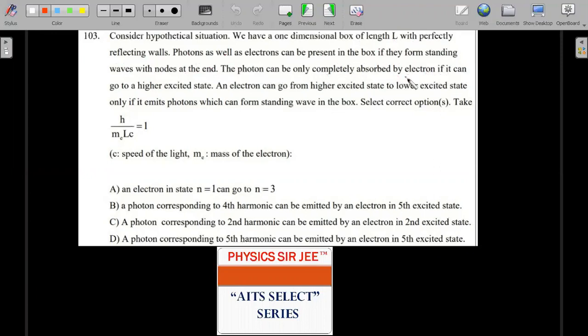The photon can be completely absorbed only by an electron if it can go to a higher excited state. An electron can go from a higher excited state to a lower excited state only if it emits photons which can form standing waves in the box.